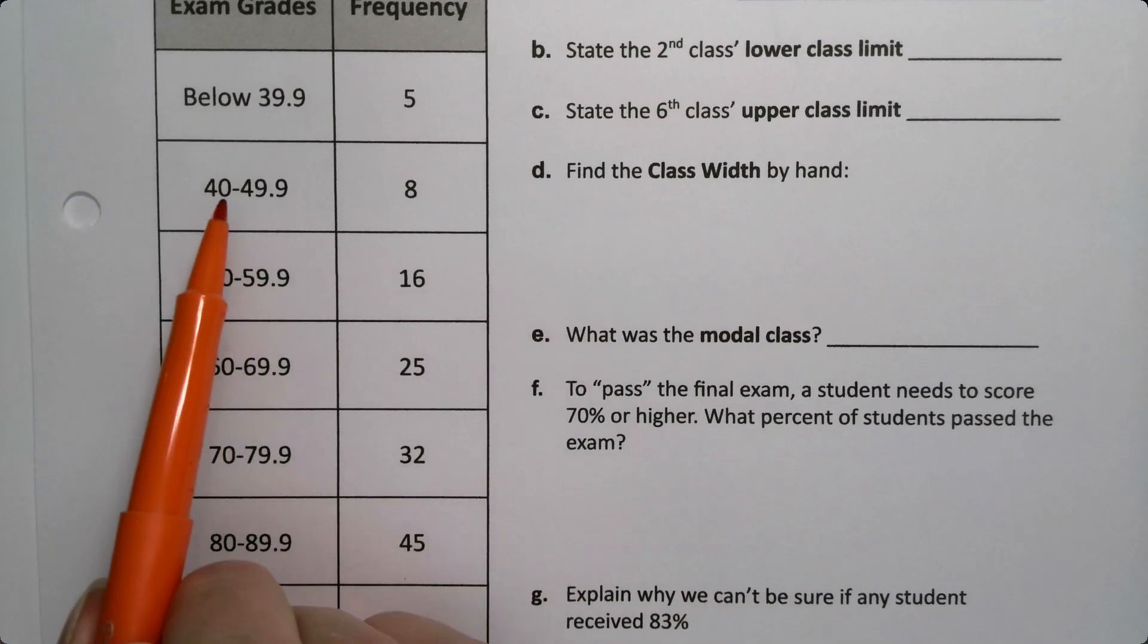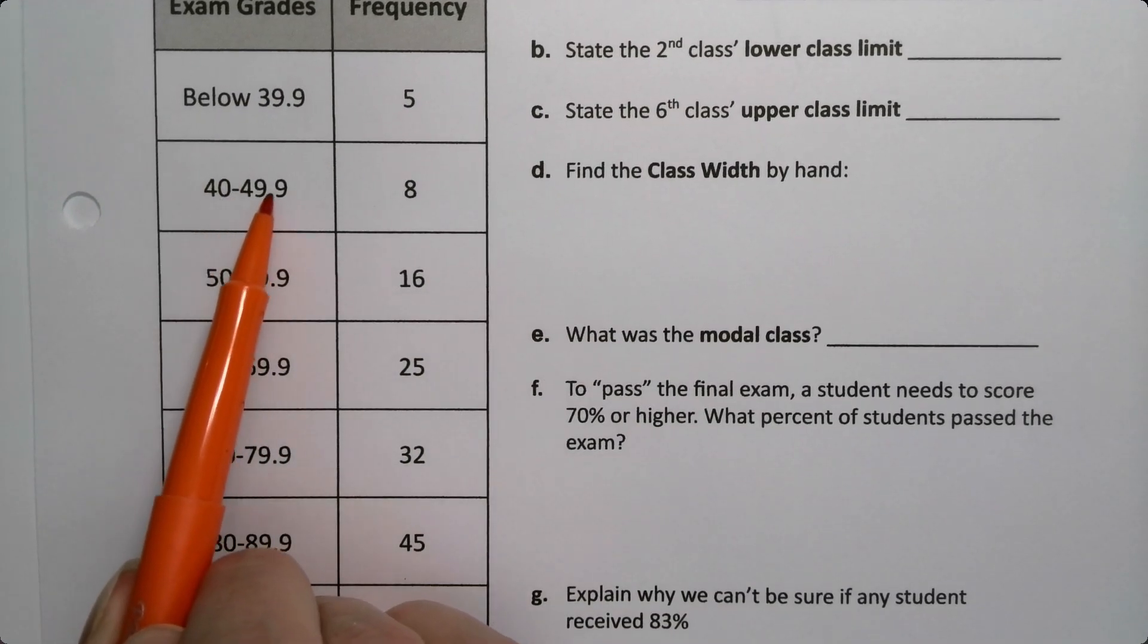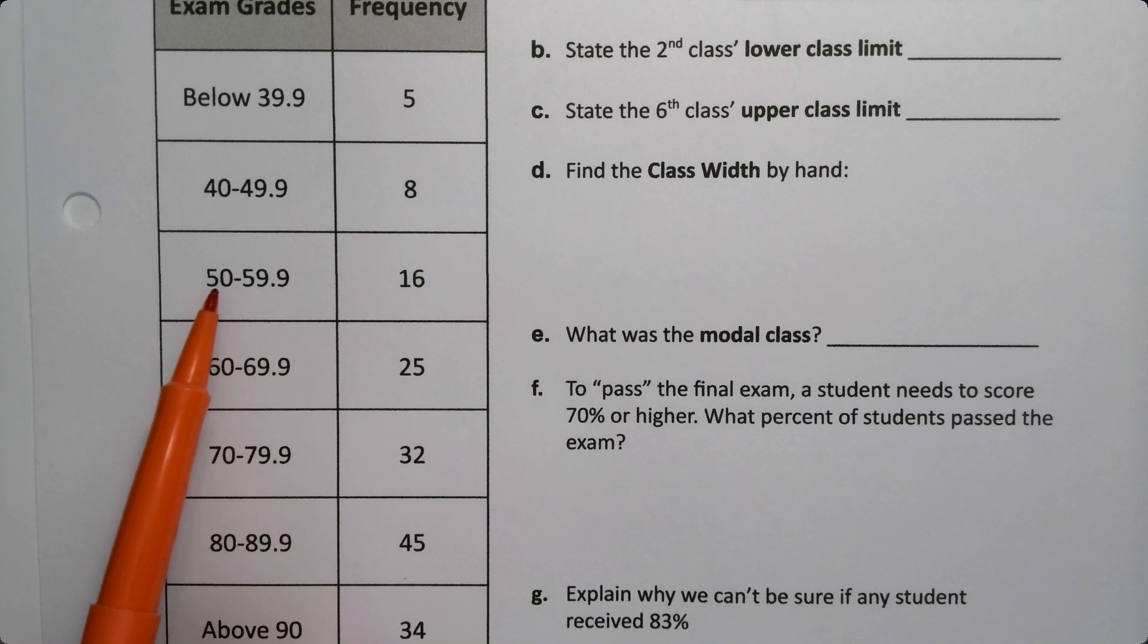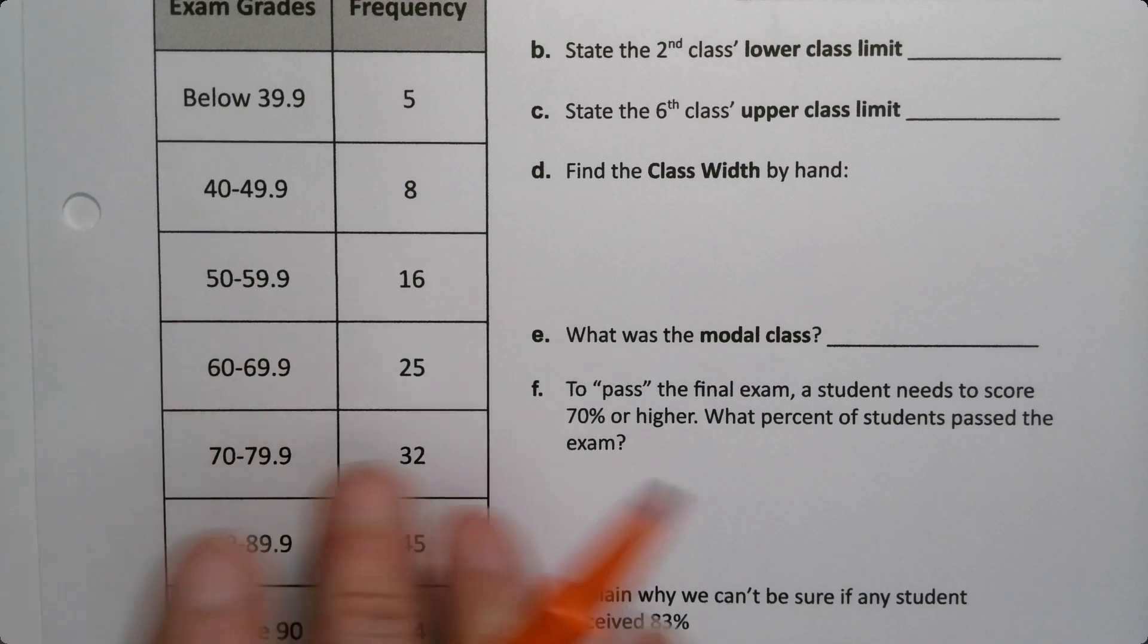It's assumed that every value up to the next lower class limit is included. For example, down here, 49.9 is listed, but it's really 49.999... everything up to 50, but not including 50 because 50 is the start of the next class or bin.